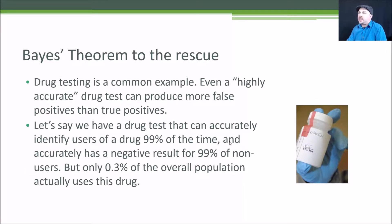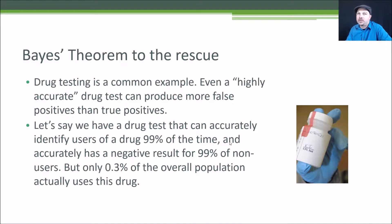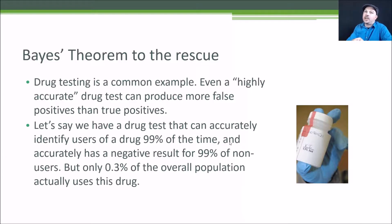Let's nail that example home a bit more. A drug test is a common example of applying Bayes' theorem to prove a point — even a highly accurate drug test can produce more false positives than true positives. In our example, we have a drug test that can accurately identify users 99% of the time and accurately returns a negative result for 99% of non-users. But only 0.3% of the overall population actually uses the drug in question.